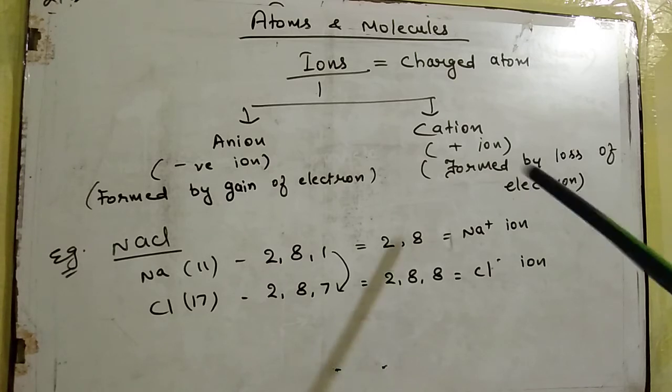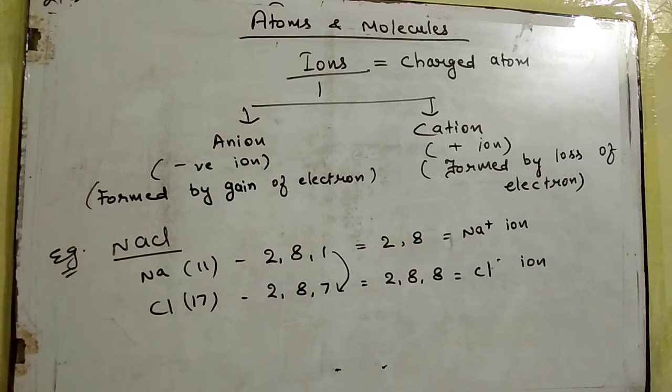Usi tarike se, jo de raha hai, dene wala hamesha bada hota hai, pata hai, aap sabhi ko? To, jo de raha hai, it means, it will get positive charge. Jo dega, uspe positive charge, aur jo lega, uspe negative charge. To, hamesha dhyan rakhiye ki, jo electron liya hai, uspe negative charge hoga, kyun? Kyunki, uspe ridha aa gaya hai, aur jo de raha hai, dene wala hamesha bada hota hai, to, hamesha positive charge, positivity rehti hai, uske saath.